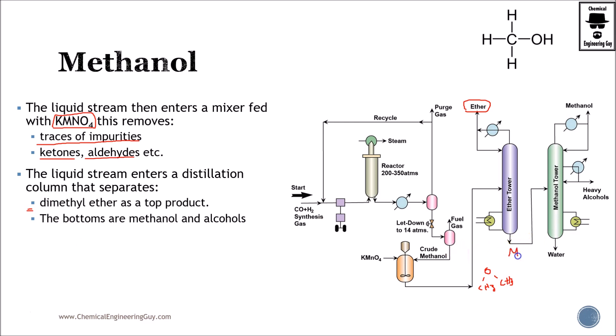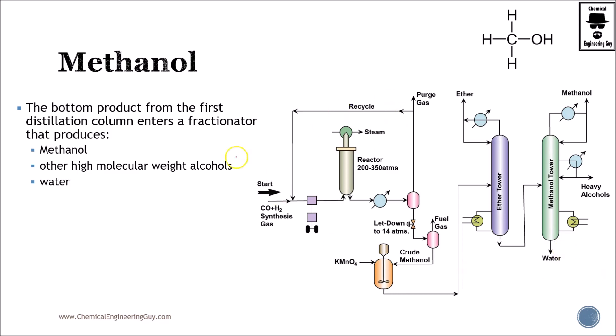The bottoms will be methanol and other alcohol products. Now we bring this to the methanol tower. We will separate the methanol as the most volatile material. We would have a takeoff of heavy alcohols and some water, which is the least volatile material from these three. And this is how we obtain methanol. First we've got to react it, then we've got to separate the very volatile gases, and then we've got to do some tray tower separations.